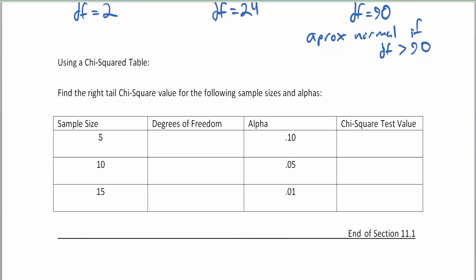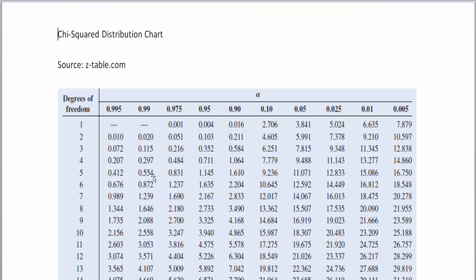We learned that sample size and degrees of freedom are related by n minus 1. So if you have a sample size of 5, which is five categories in our problems, then you have four degrees of freedom. And if your alpha is 10 percent, we can look this up on the chart. So let's look up four degrees of freedom, which is right here.